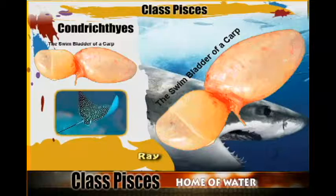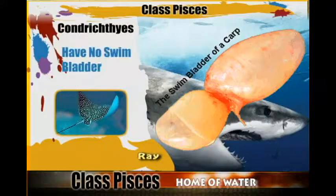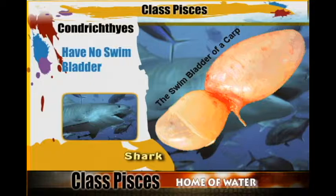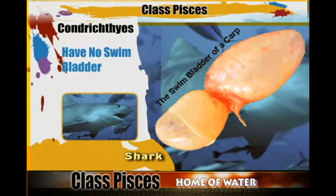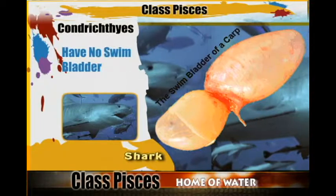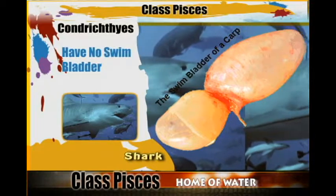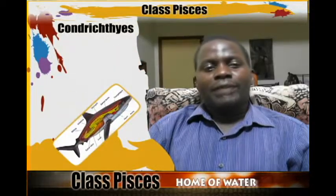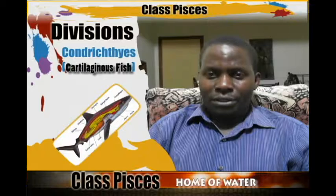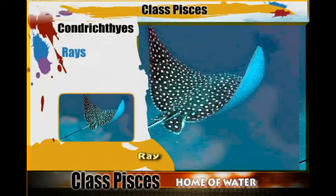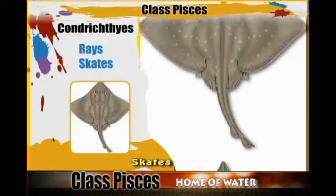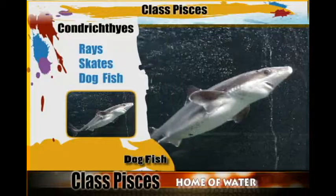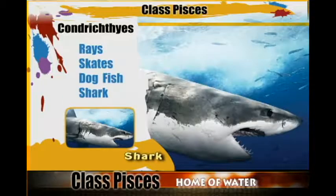The Chondrichthyes do not have a swim bladder, and the swim bladder is what helps fish to float on water. The Chondrichthyes are cartilaginous fishes and they include the ray, the skate, the dogfish, and the sharks, among many others.